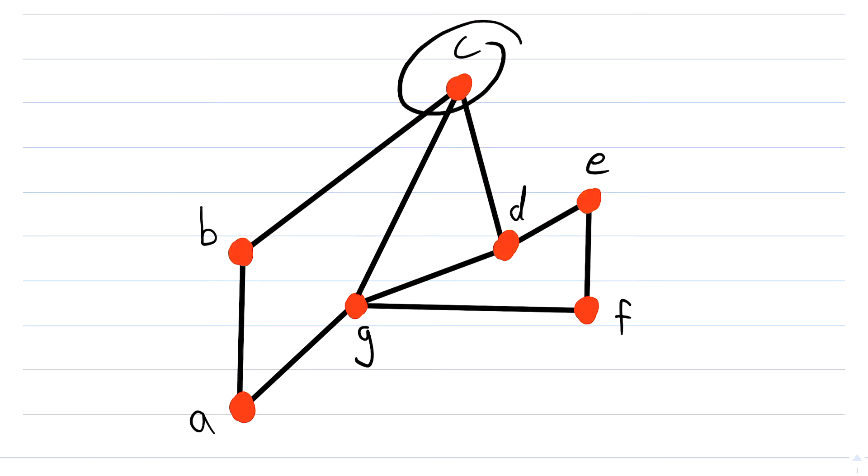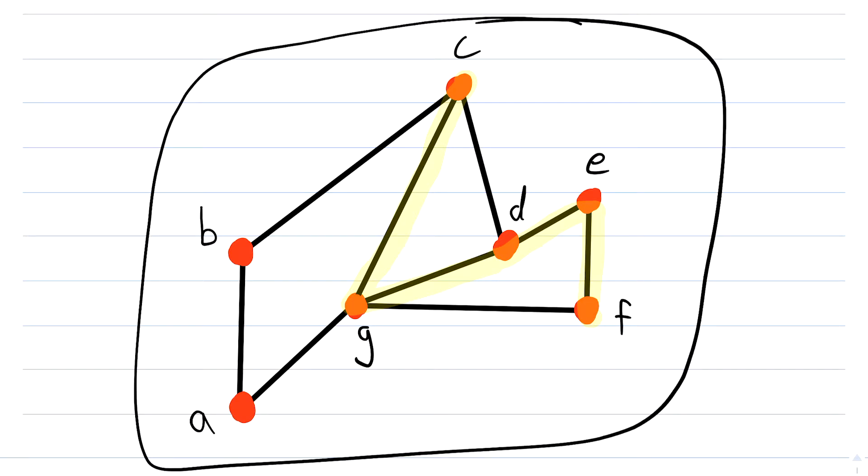For one more example, c and f are connected vertices. And we can see that we could go from c to g, from g to d, from d to e, and then from e to f. And of course, there are many other paths we could have taken. But the point is, there exists at least one path connecting every pair of vertices in this graph. That's what makes it a connected graph.